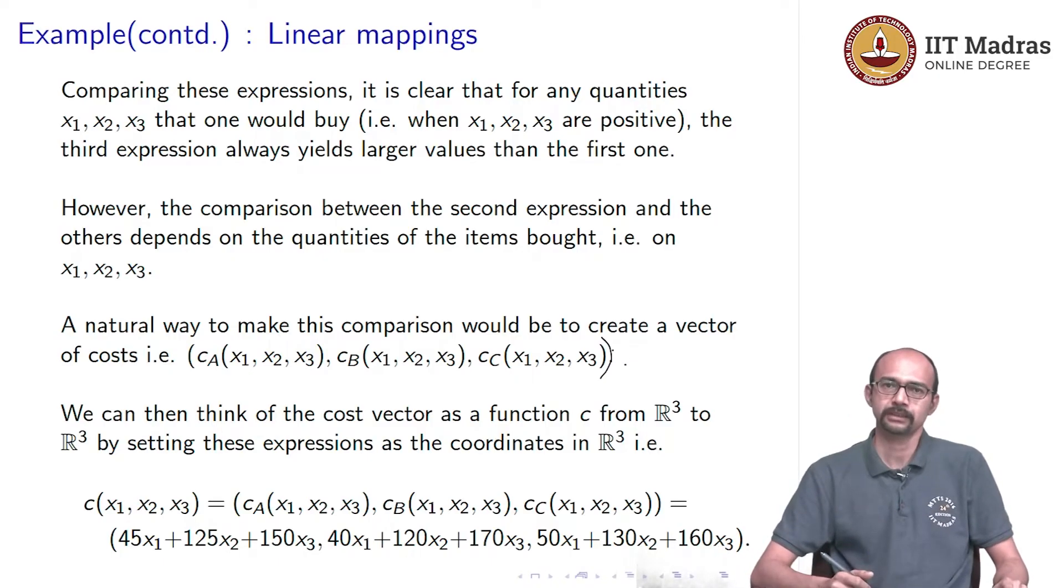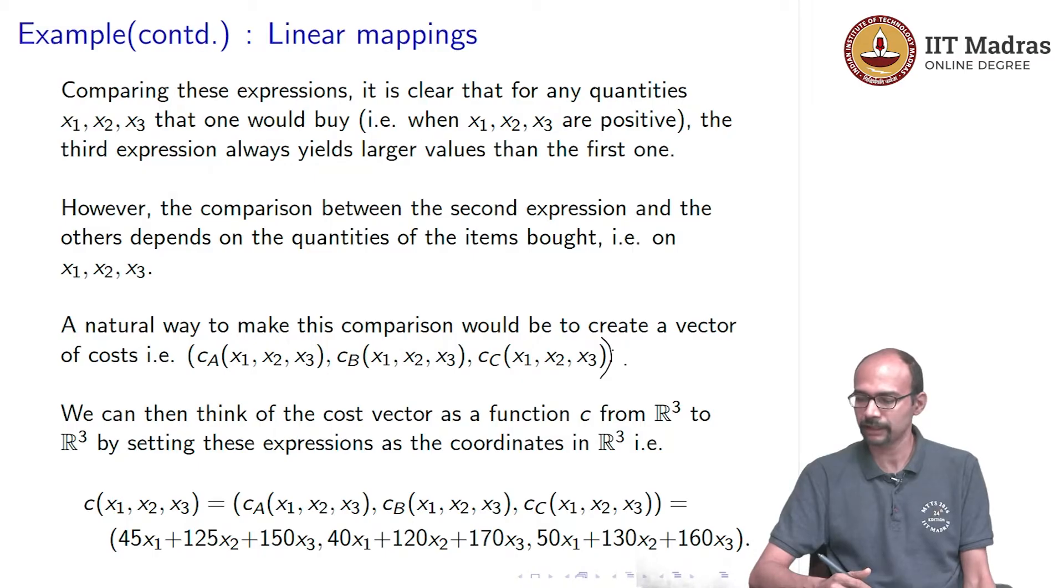And just to recall each of these are given by linear expressions, linear combinations, 45x1 + 125x2 + 150x3 and then 40x1 + 120x2 + 170x3 and then 50x1 + 130x2 + 160x3. So, this is the function, the cost function, wherein the first coordinate of the cost function tells you the cost in shop A, the second coordinate tells you in shop B and the third coordinate tells you in shop C. And now when you are given x1, x2, x3, you put it into this cost function, look at these three numbers that it produces, and then you choose the smallest one. This would be a good way of trying to compare.